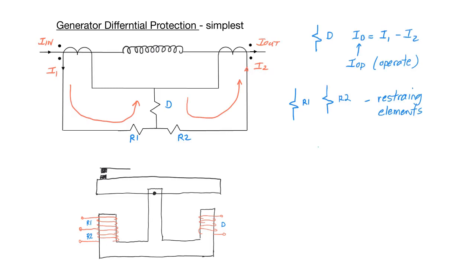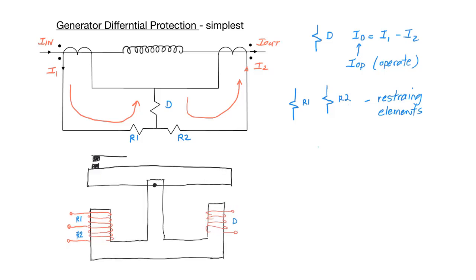On the right-hand side, I've drawn the three elements of the differential relay. All three elements experience a current, but the differential element will experience the current difference between I1 and I2. These are the currents flowing through the two restraining elements R1 and R2. If the difference current is equal to zero, the relay will not operate. We have the differential or operating element and the two restraining elements, tied together at a common point.